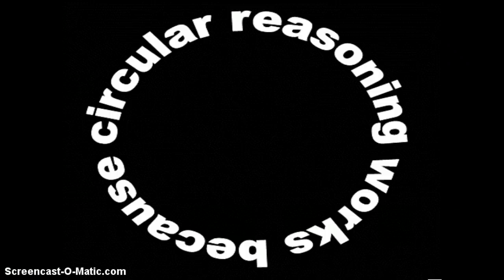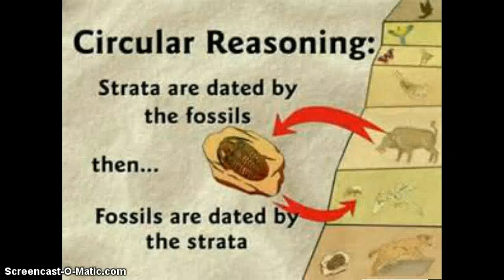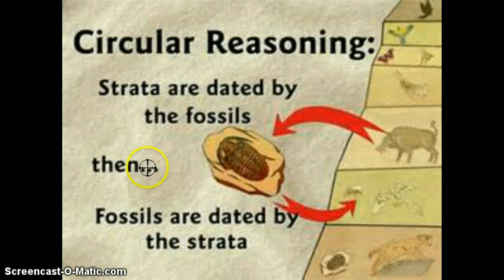Circular reasoning is a logical fallacy where something is explained by itself — basically, A equals B because B equals A. A perfect example of that is how fossils are dated. Fossils are dated by the strata in which they are found, and the strata in which they are found are dated by the fossils they contain. That is circular reasoning — strata dated by fossils, and fossils dated by strata.